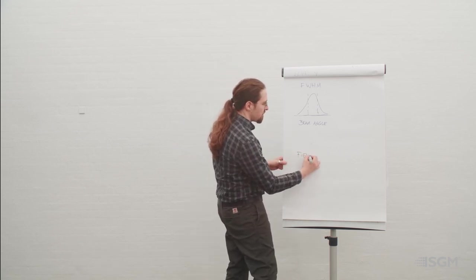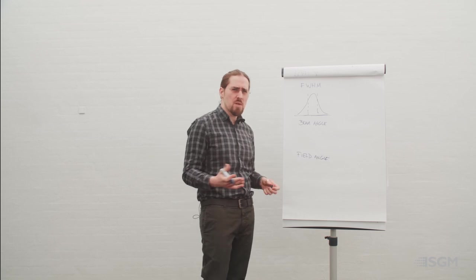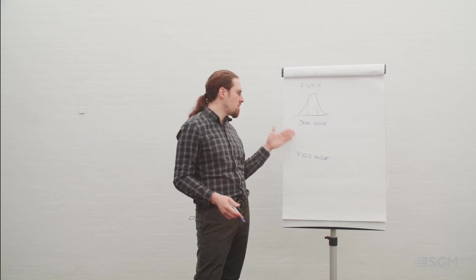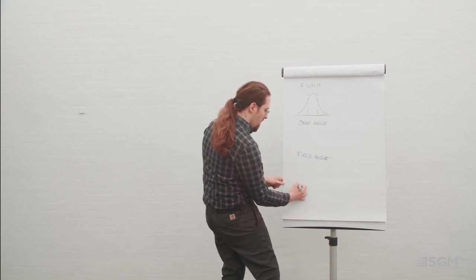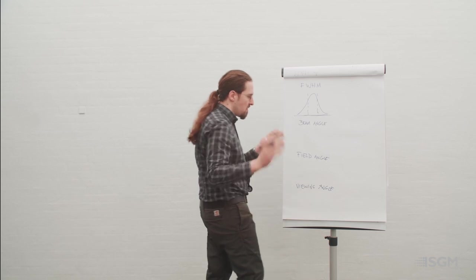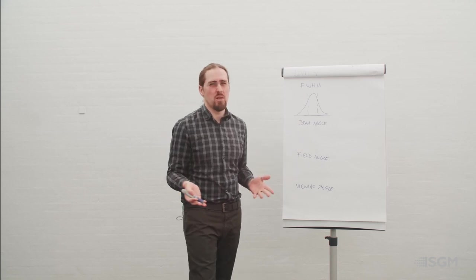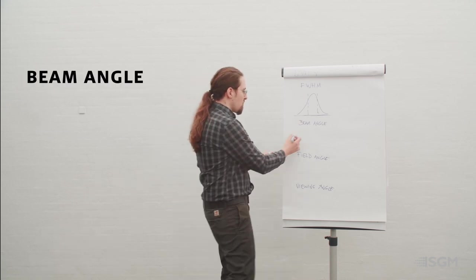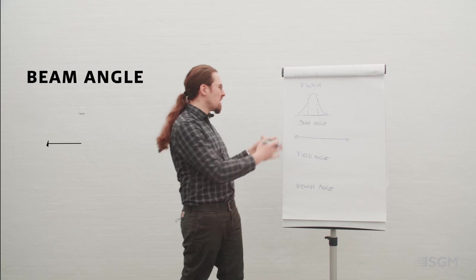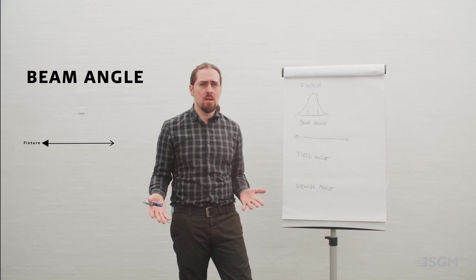In photometrics you sometimes get information about the field angle as well. These are two different concepts. In some products, photometric files are not available, or if available, they won't mention beam angle or field angle — they'll talk about viewing angle. We tend to consider the beam angle as the useful light.